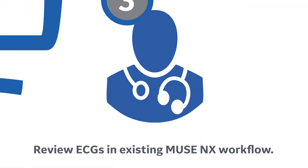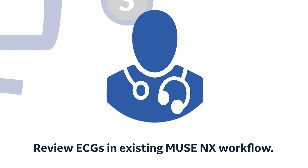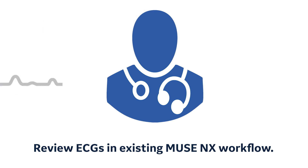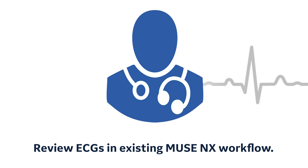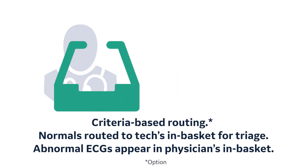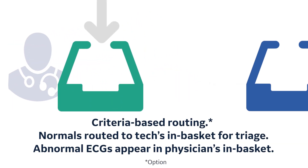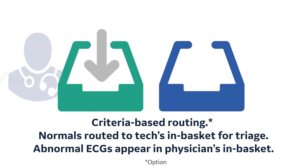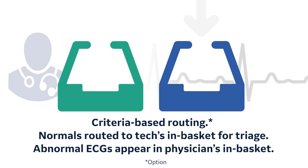Muse NX shows the 6-lead ECG data in a way that's similar to your existing 12-lead ECG workflow. Prioritize incoming mobile ECGs quickly with criteria-based routing to manage the data more efficiently.